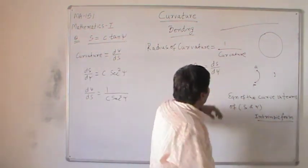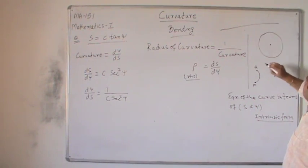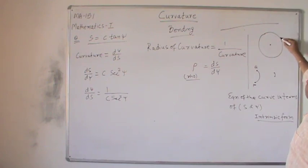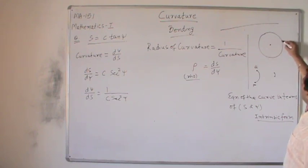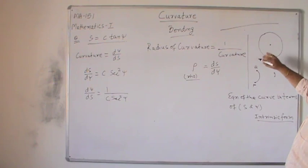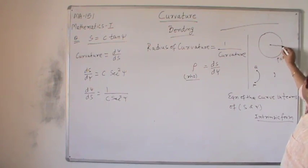One more point: if you observe a circle, by intuitive meaning, the bending at every point of the circle is uniform. Therefore curvature remains the same at all points. And you will find that the radius of curvature for the circle, if we consider its equation, is actually equal to the radius of the circle itself.